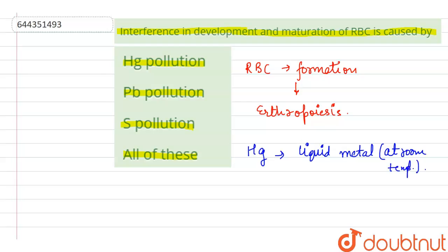Mercury is a toxic heavy metal. It causes various metabolic disorders and causes cancer.